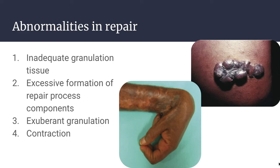Excess formation of components of the repair process includes things like hypertrophic scars or keloids. Excess collagen deposition can create a raised or hypertrophic scar, and if the scar tissue grows beyond the borders of the original wound, this creates a keloid. Exuberant granulation is granulation tissue which protrudes above the level of the surrounding skin and blocks re-epithelialization; this must be removed by surgery to allow proper healing. Finally, contraction of the wound site is an important part of the normal healing process, but if it is too severe and deforms the wound and surrounding tissue, it is termed contracture and can potentially compromise the movement of joints.